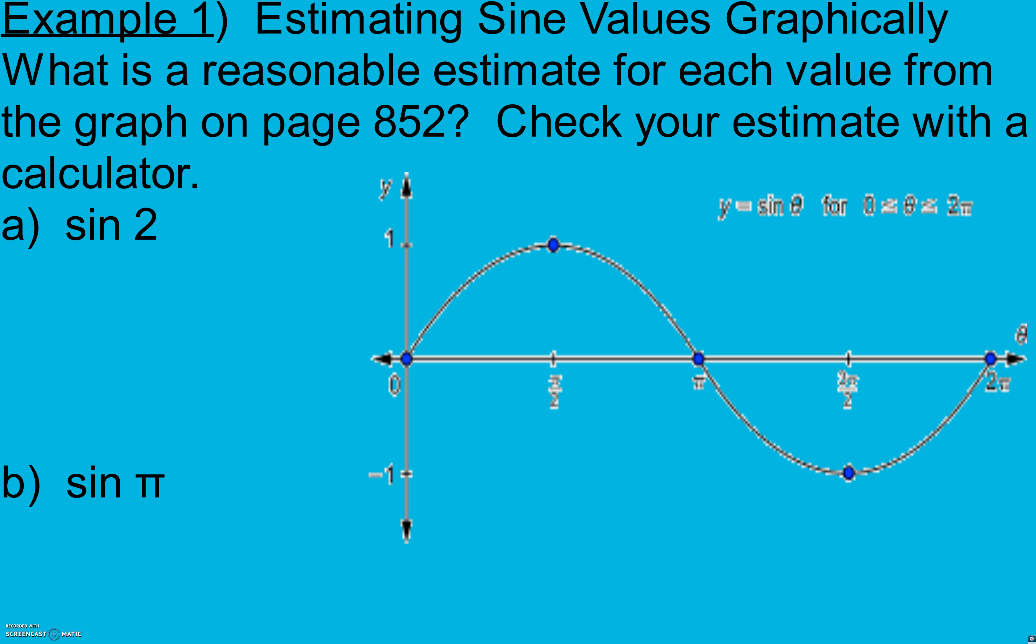remember that pi is approximately 3.14. So pi over 2 is 3.14 divided by 2, or 1.57. So if this is 3.14, that's about 3, that's about 1.5, and 2 is going to be about here. I'm going to go right about here is where sine is at 2. And I'm going to say that's a little bit less than 1, like 0.9.